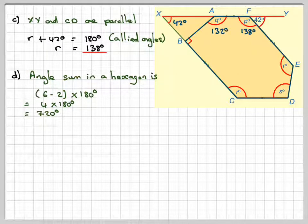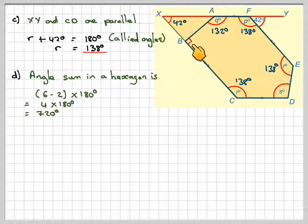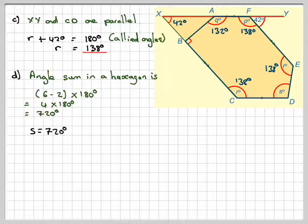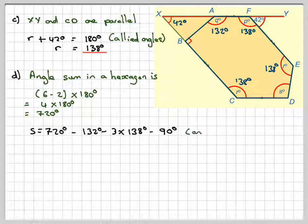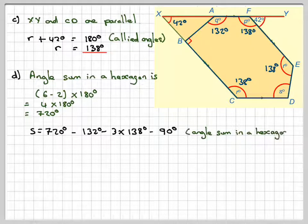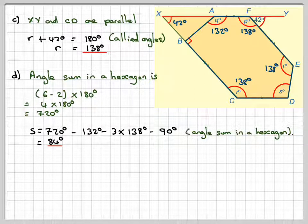Looking at the angles, this is 138, this is 132, this is 138, this is 138. That allows us to find S because we know this one is also 90. So S will be 720 minus 132 minus 3 lots of 138 minus the 90 degrees, which is the angle sum in a hexagon, and the final answer will be 84 degrees.